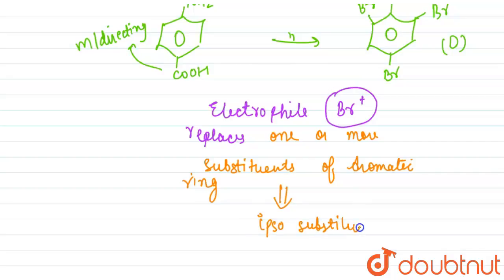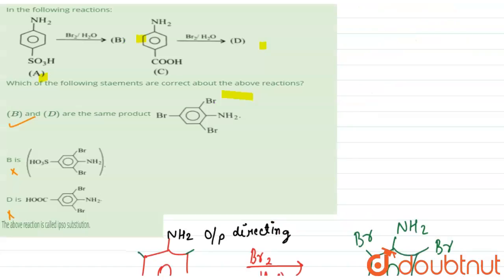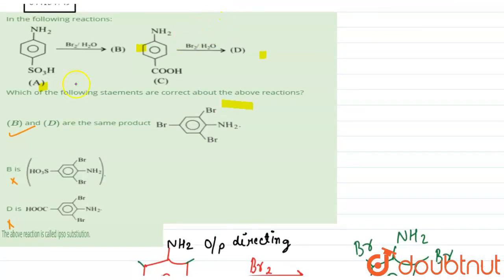Now coming to the options, we can see that statement A is correct - that B and D are the same product. Statement B is wrong because B is not this product, B is same as D. Statement C is also wrong. As we can see, D is not this product.